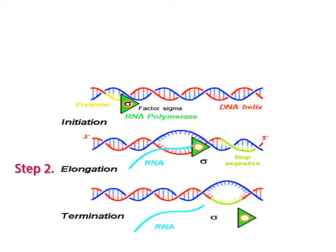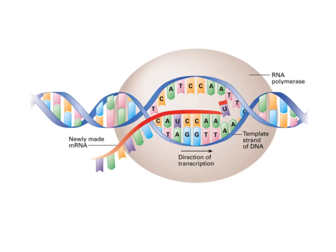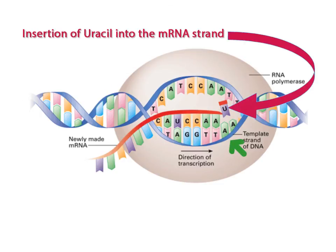Elongation is the second step in transcription. In this second step, RNA polymerase adds ribonucleotides to the DNA template. Each ribonucleotide is added to the growing mRNA strand using the base pairing rules. Remember, though, that mRNA does not contain thymine. So whenever an adenine is encountered on the DNA template, uracil is inserted into the growing mRNA strand. Other than this exception, the base pairing rules that apply to DNA are the same in RNA.